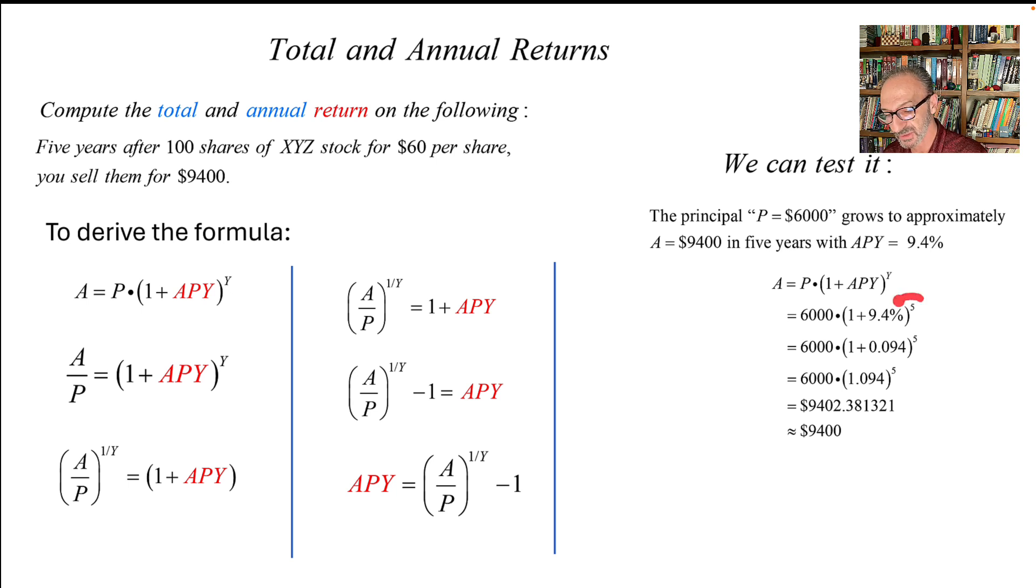We have the percentage, the yearly percentage that we found, which is approximate, and we have the number of years, which is five. Doing the math, I could just write this as decimal.